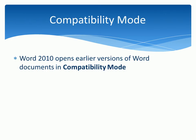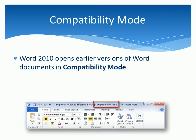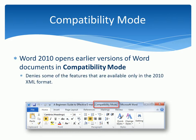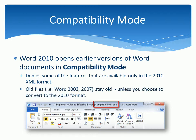When working in Word 2010, we can open earlier versions of Word files in what's called compatibility mode. We need to keep in mind, though, that compatibility mode denies some of the features that are available only in the 2010 XML format. We also need to remember that older files, like those created in Word 2003 or 2007, stay old, unless we choose to convert them to the 2010 format.